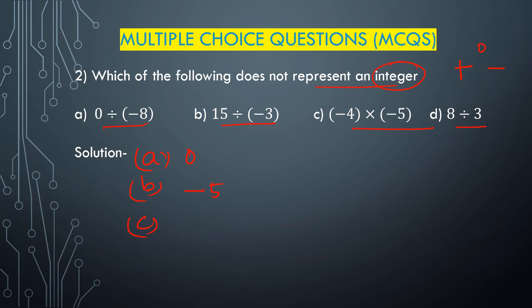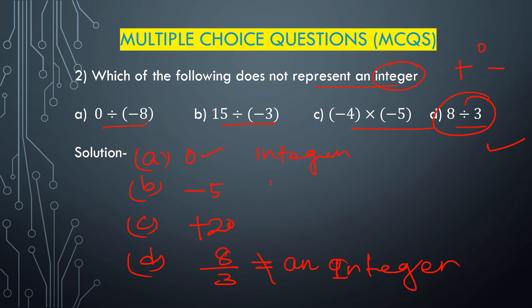Option C: minus 4 multiplied with minus 5 — minus times minus is plus, and 4 times 5 is 20, so it is plus 20, which is an integer. Option D: 8 divided by 3 — this is not an integer; it is a rational number. So options A (0), B (minus 5), and C (20) are all integers, but option D (8 divided by 3) is not an integer. Therefore option D is the correct answer.